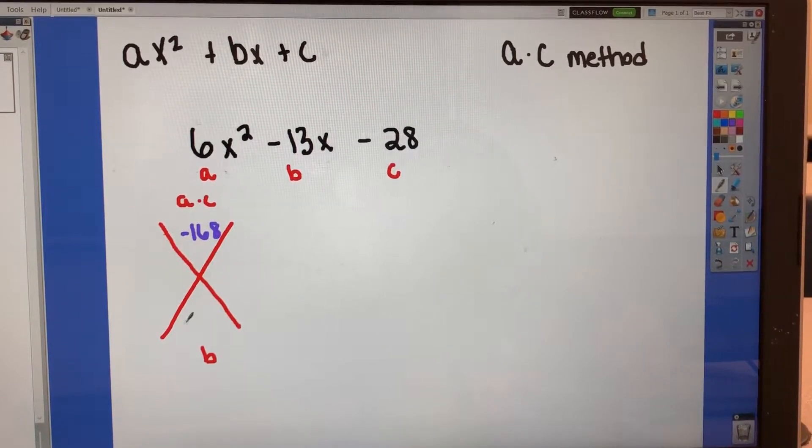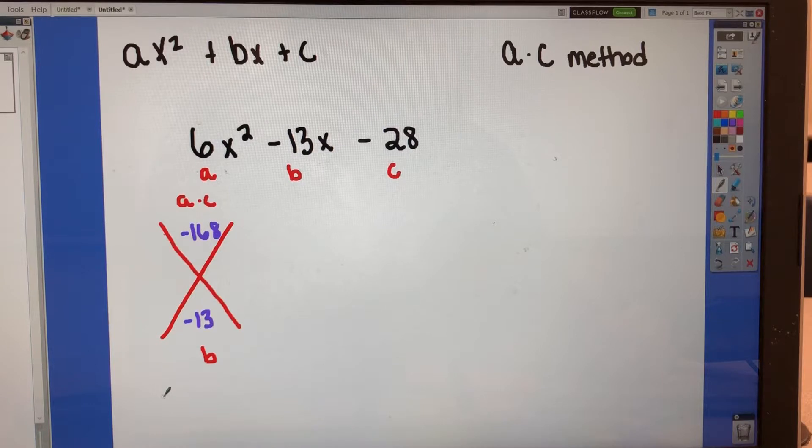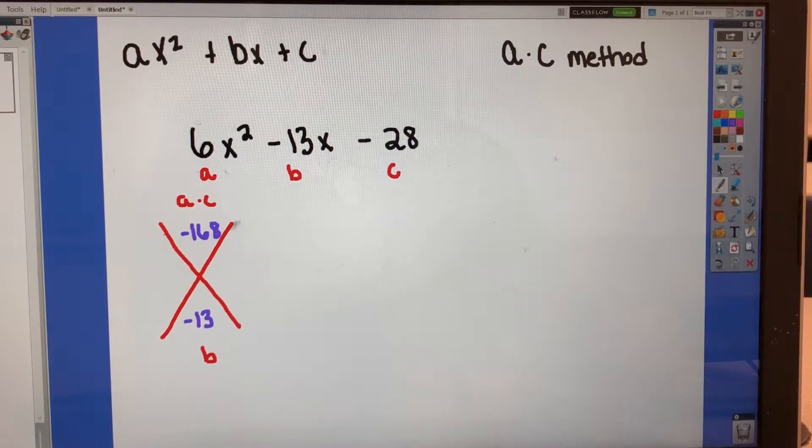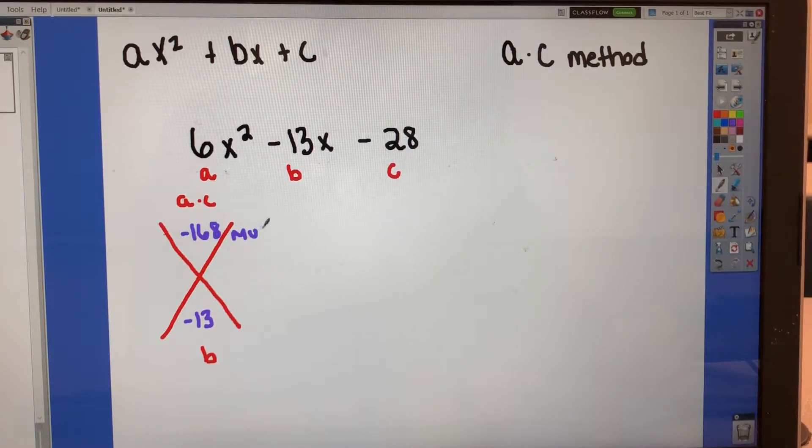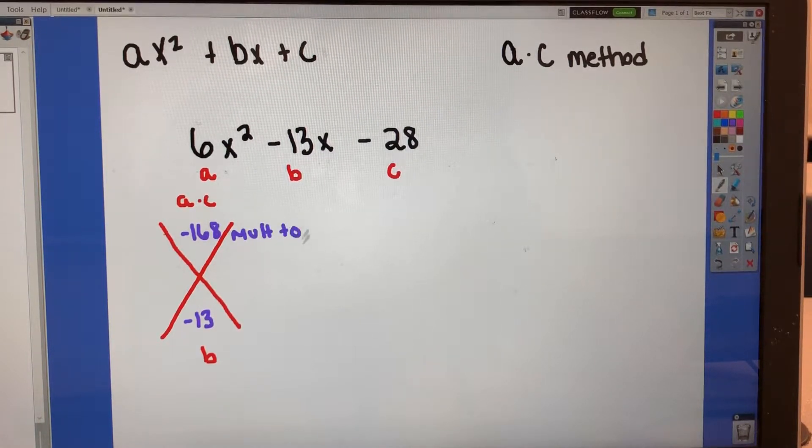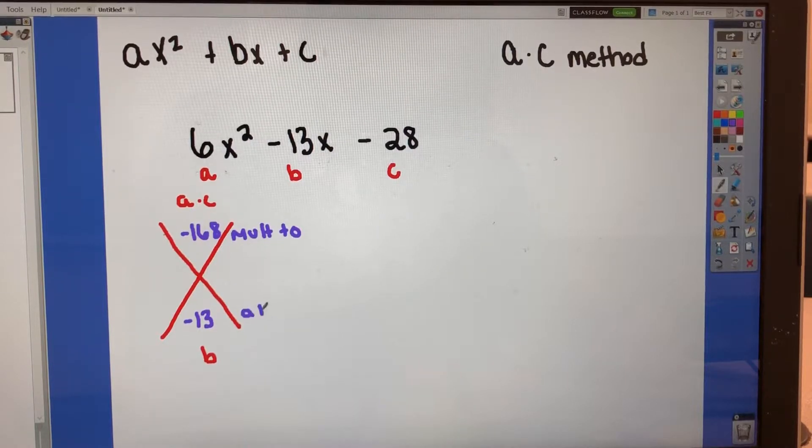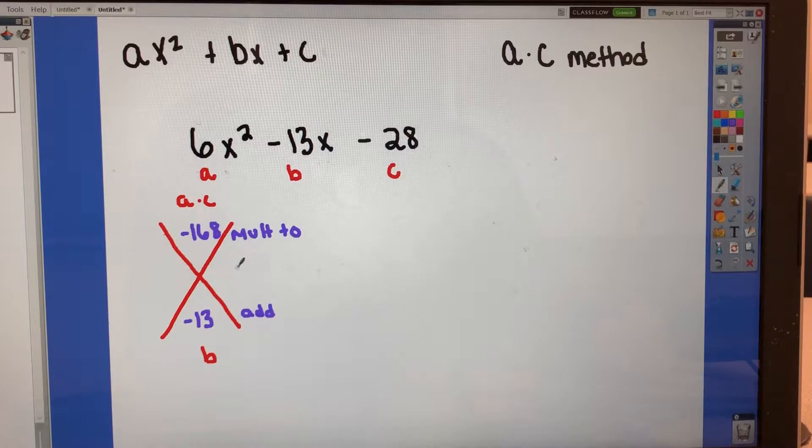And then b is going to be negative 13. Then what we want to do is we are looking for factors of 168 that multiply to 13. So we want things that are going to multiply to negative 168, but they're also going to add or combine to negative 13. And we're going to put those two numbers on the two sides of our x's.